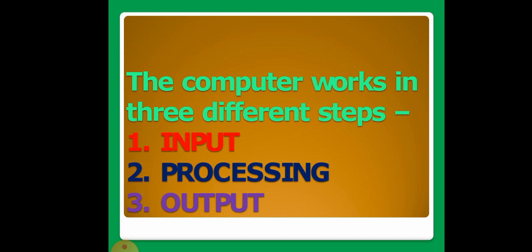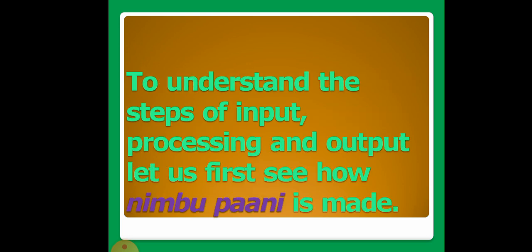First one is input, second one is processing and third one is output. To understand the steps of input, processing and output, let us first see how nimbu paani is made. Nimbu paani is nothing but lemon juice. I will explain with an example.